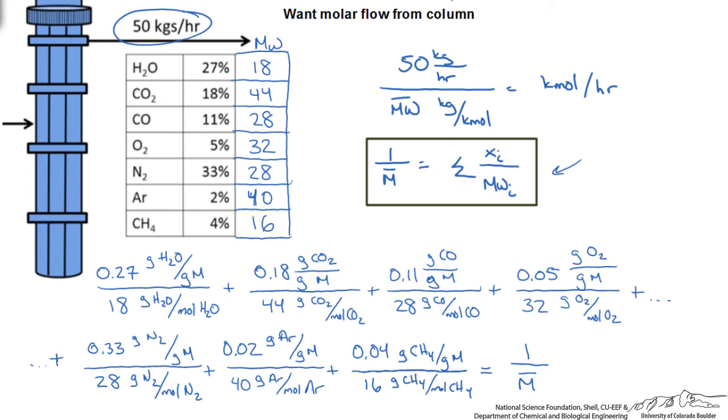Just looking at the chart, our lowest molecular weight is 16 and our highest is 44, so we know our average has to be between these two values. When we do these calculations we get 0.04 moles of mixture per grams of mixture. We take the reciprocal of this and get an average molecular weight of 25.4 grams of our mixture per mole of our mixture.